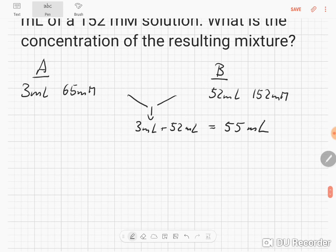Now what we need to do is calculate how many moles we have in A, how many moles we have in B, and add them both together. So we calculate the moles. Let's do A, the moles in A.